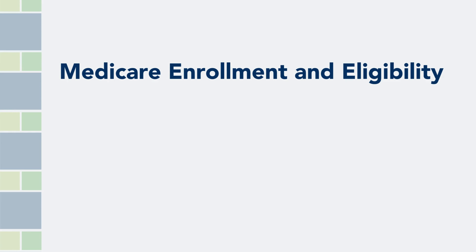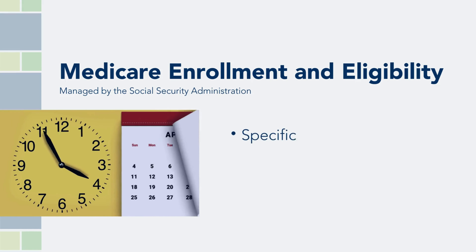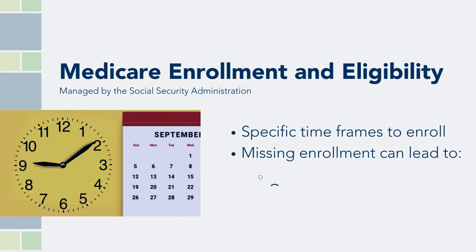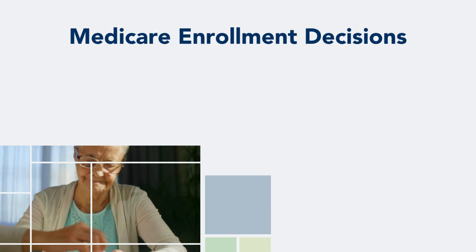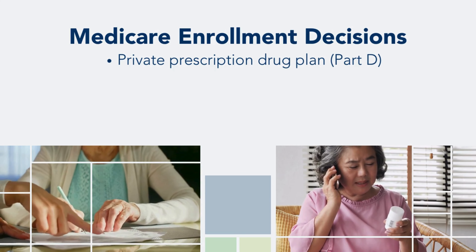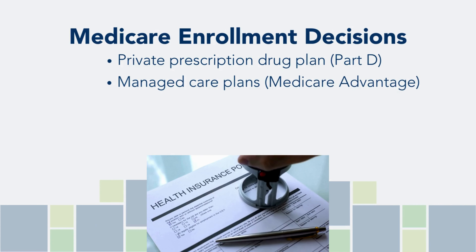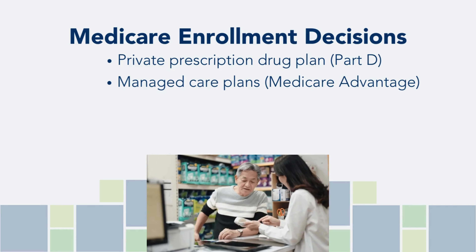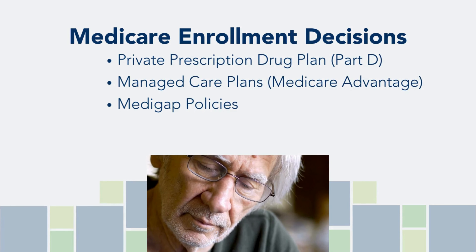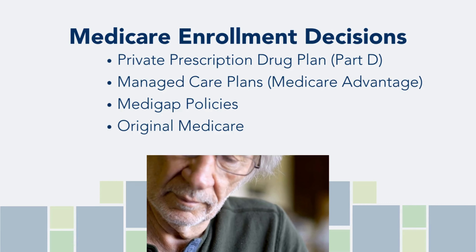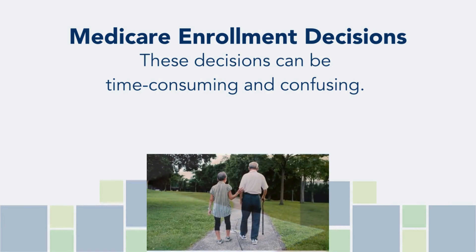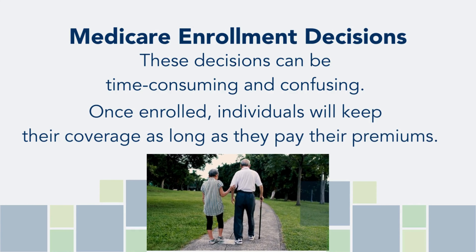Medicare enrollment and eligibility is managed by the Social Security Administration. There are specific timeframes during which individuals can enroll in Medicare, and missing these opportunities can result in coverage gaps and enrollment penalties. When enrolling in Medicare, individuals can also opt for a private insurance plan to cover prescription drugs, known as Part D. Additionally, they can choose to enroll in a managed care plan, referred to as a Medicare Advantage plan, or purchase supplemental insurance to cover coinsurances, called Medigap policies. Those who do not enroll in a Medicare Advantage plan retain original Medicare. Navigating the Medicare enrollment process can be time-consuming and confusing. However, once enrolled, individuals will maintain their Medicare coverage as long as they continue to pay their premiums.